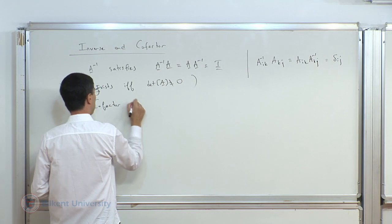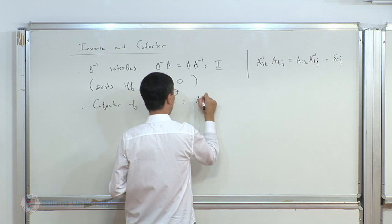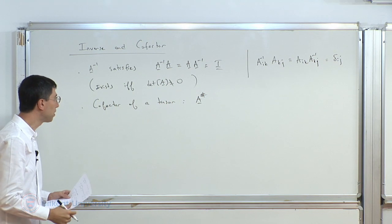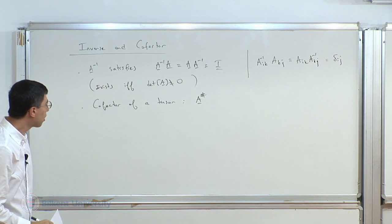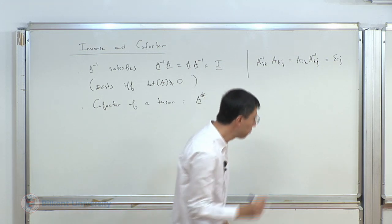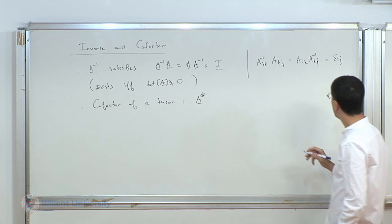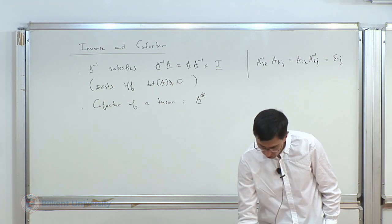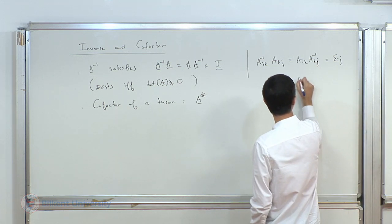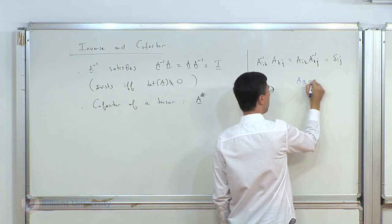Once you have the cofactor matrix, you can calculate the invariants. In 3D, the second invariant equals the trace of the cofactor — that's something you can show independently. This gives a simple way to calculate the second invariant once the cofactor is computed.